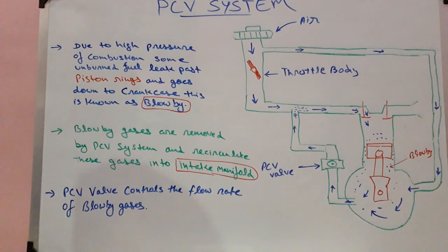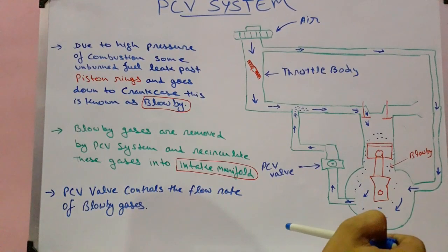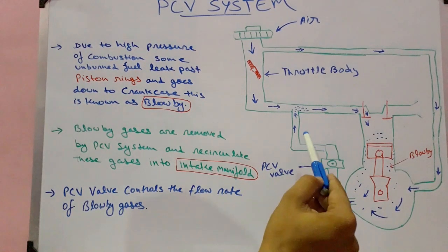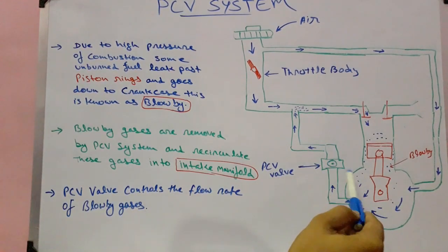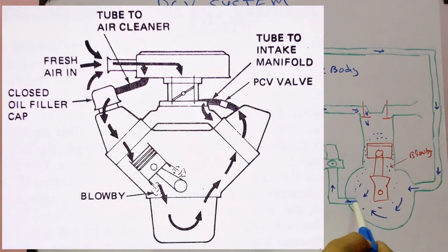A PCV system uses engine vacuum to withdraw air into the crankcase. The intake manifold is connected with the PCV valve via a hose, and the other side of the PCV valve is connected to the crankcase so that it can allow fresh air and blow-by gases to flow through this passage.